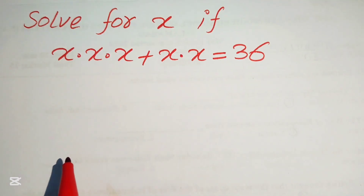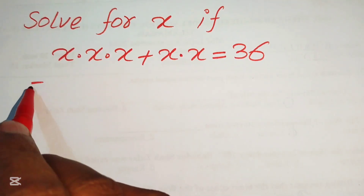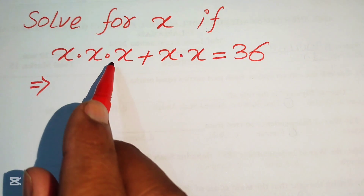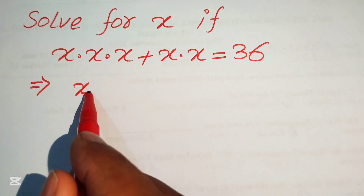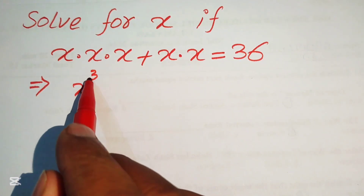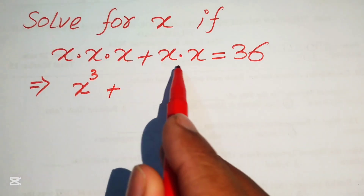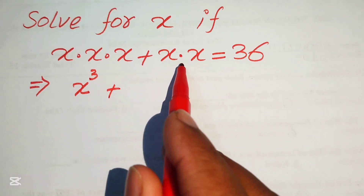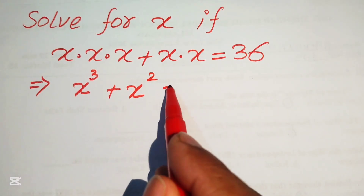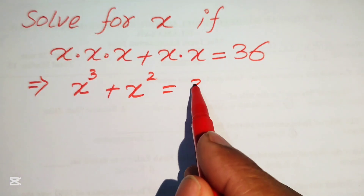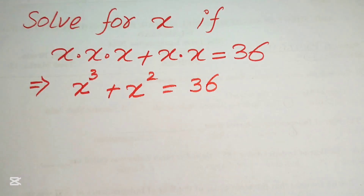The very first thing we do is write each repeated multiplication in exponential form. So x multiplied three times is written as x cubed, and x multiplied two times is written as x squared. The equation becomes x cubed plus x squared equals 36.